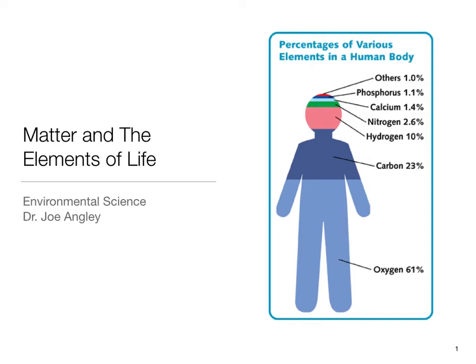Hi students, this is Professor Joe Angley. In this lesson we will be learning about matter and the building blocks of life here on planet Earth. At the end of this lesson you should be able to understand: one, the law of conservation of matter; two, the concept of the atom; three, the pH scale; four, the four categories of biomolecules; and number five, the importance of carbon, hydrogen, oxygen, nitrogen, and phosphorus in the chemistry of life. So let's get started.